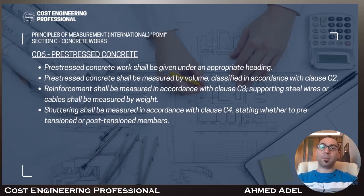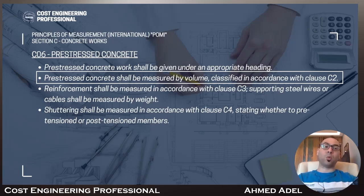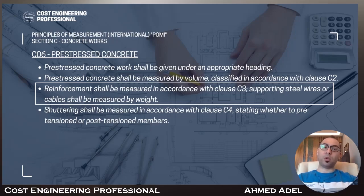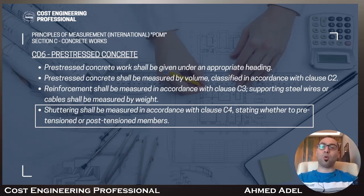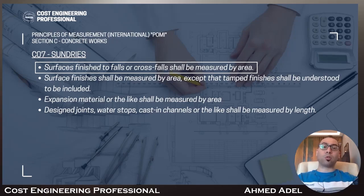Subsection C6 is pre-stressed concrete. Pre-stressed concrete work shall be given under an appropriate heading. The concrete shall be measured by volume, classified in accordance with subsection C2. Reinforcement shall be measured per subsection C3, and supporting steel wires or cables shall be measured by weight. Shuttering shall be measured in accordance with subsection C4, stating whether it applies to pre-tension or post-tension members.